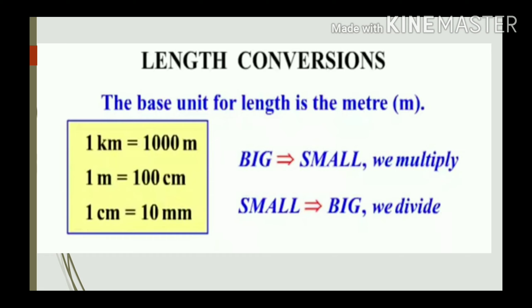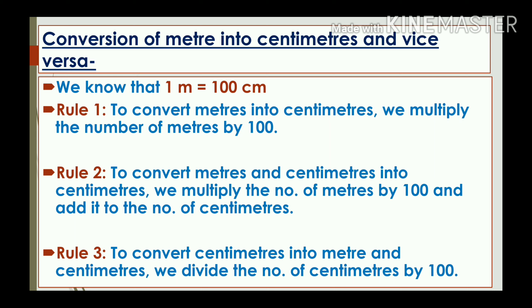Now let's see length conversion — how we do the conversion of length. The base unit for length is the metre. One kilometre equals 1000 metres, one metre equals 100 centimetres, and one centimetre equals 10 millimetres. To convert from a bigger to a smaller unit, we multiply by 10, 100, or 1000. To convert from a smaller to a bigger unit, we divide by 10, 100, or 1000.